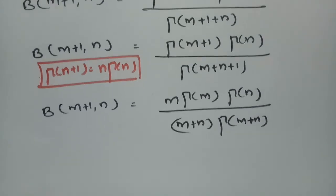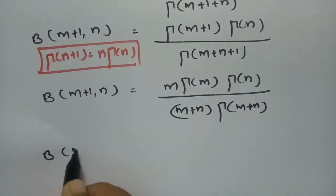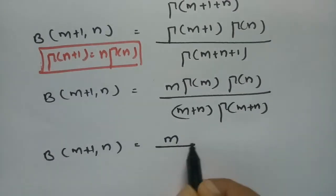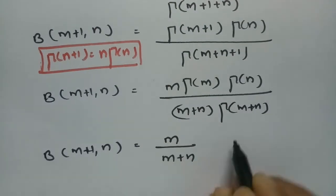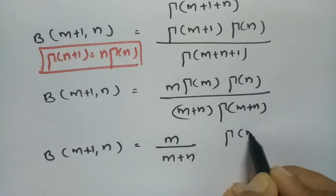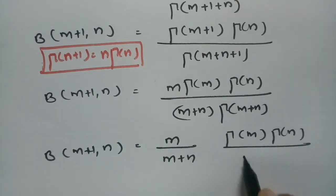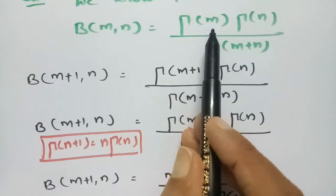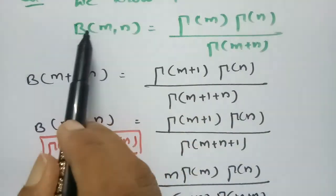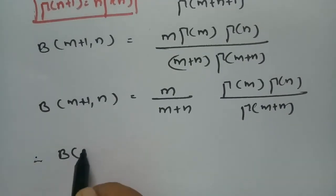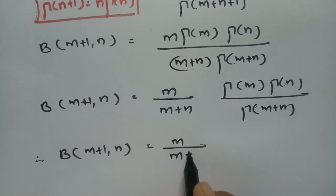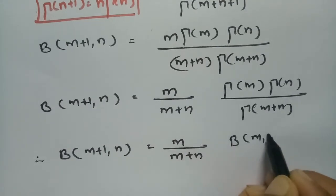Now we can factor out m by m plus n. What remains is gamma m into gamma n by gamma of m plus n, which is nothing but beta of m comma n. Therefore, beta of m plus 1 comma n is equal to m by m plus n into beta of m comma n.